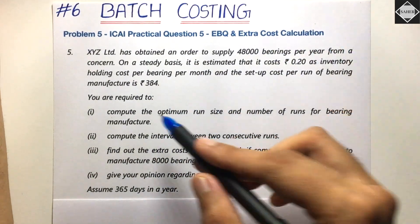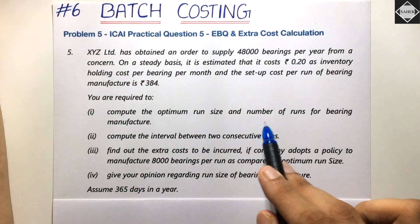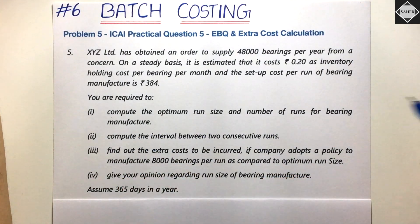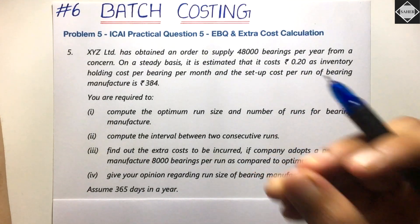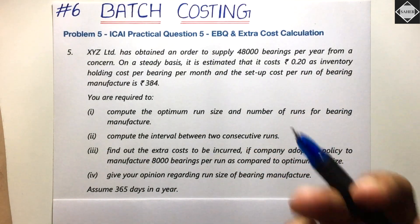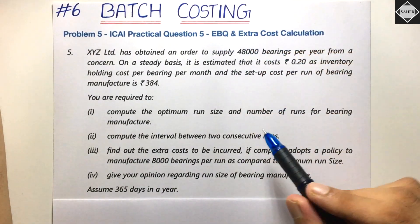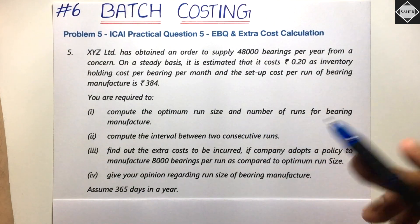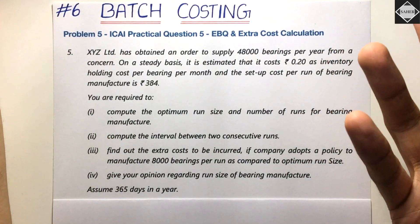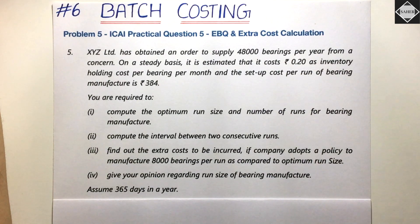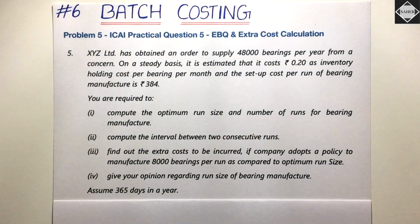The first requirement is to compute the optimum run size and number of runs. Optimum run size means the most Economic Batch Quantity — the most economic quantity to produce in a single batch. Number of runs refers to how many times the production process is set up in a year, i.e., the number of batches in total.